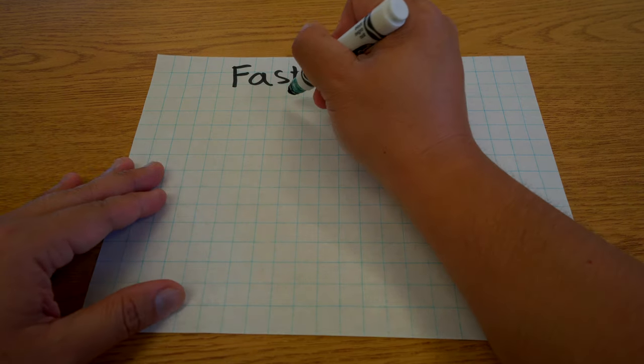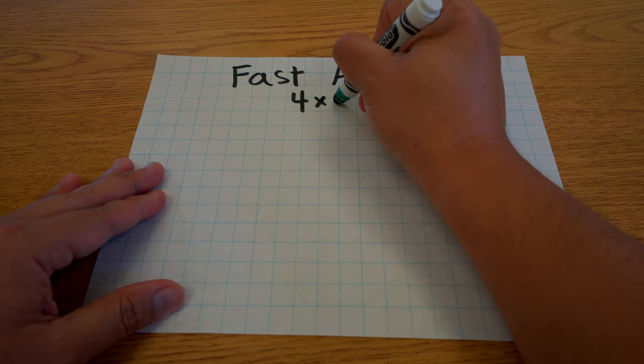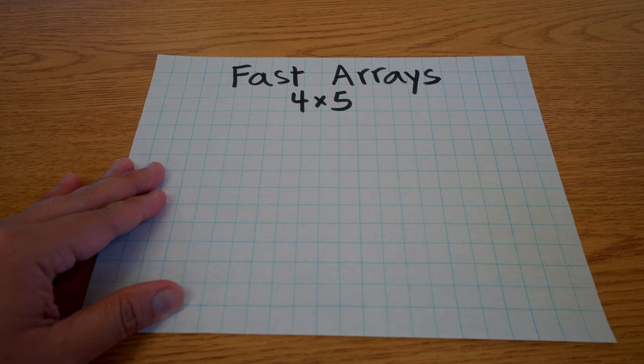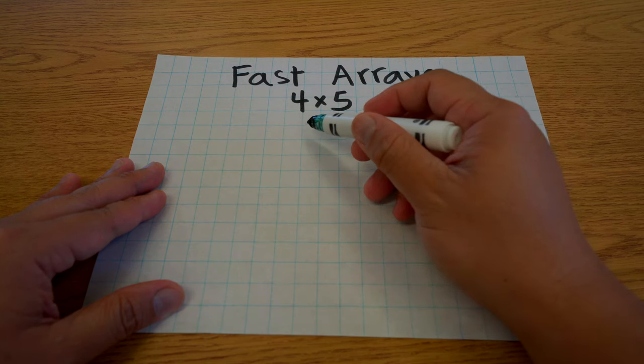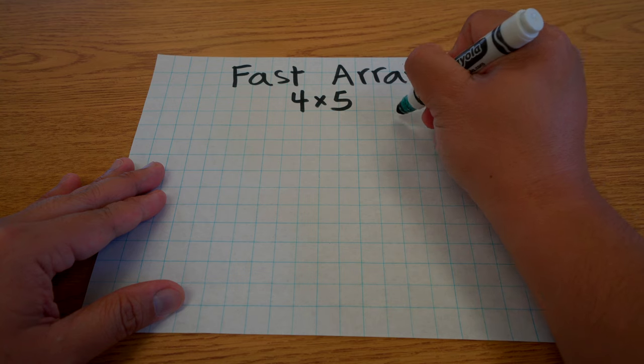So for example, if I do four times five, I could say that this is four rows of five. So let's do four rows of five.